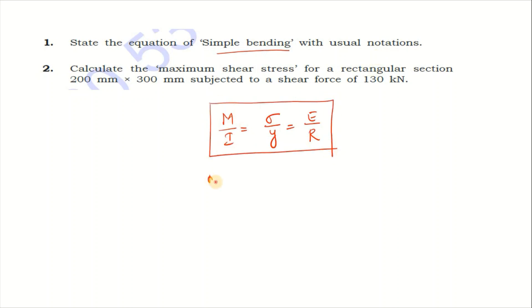The usual notation is M is moment of resistance, I is moment of inertia, sigma is bending stress, y is distance of neutral axis from extreme fiber, E is Young's modulus.